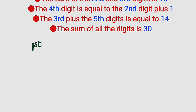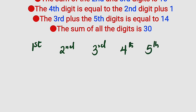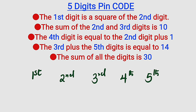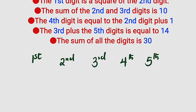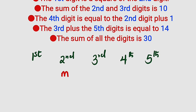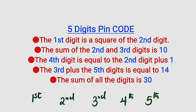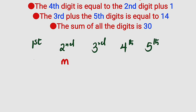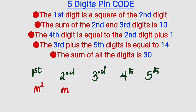Let's label the five digit positions. According to the first statement, the first digit depends on the second digit, so we must know the second digit first. We'll declare the second digit as m. If the second digit is m, then since the first digit is the square of the second digit, the first digit equals m squared.